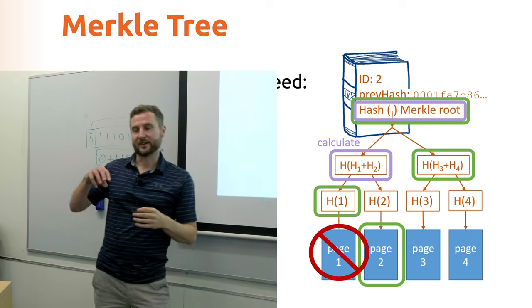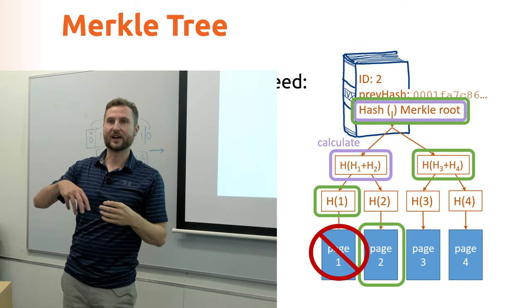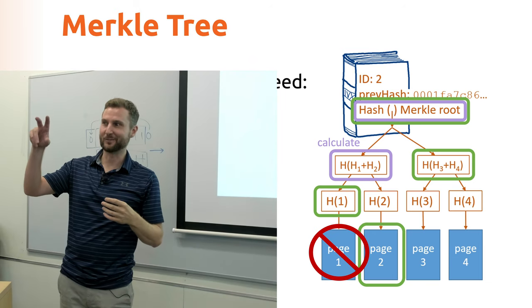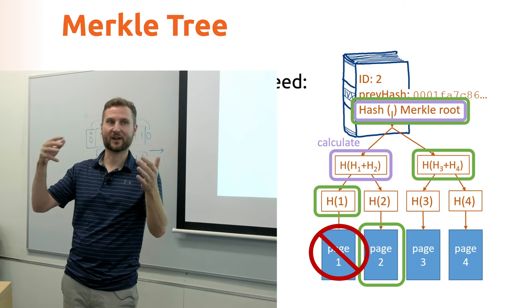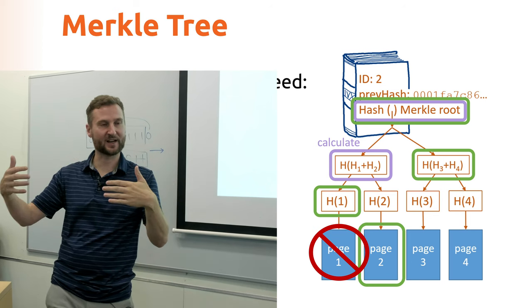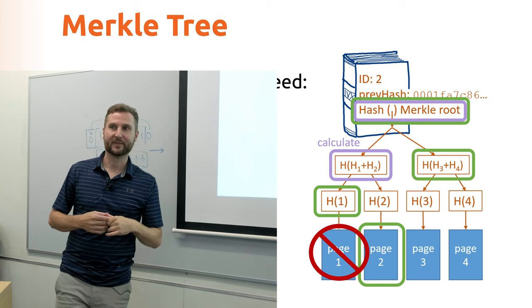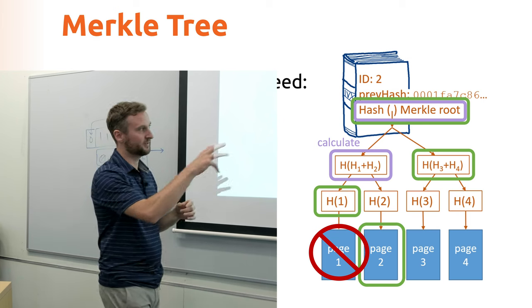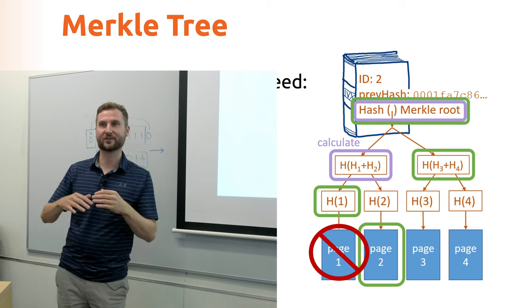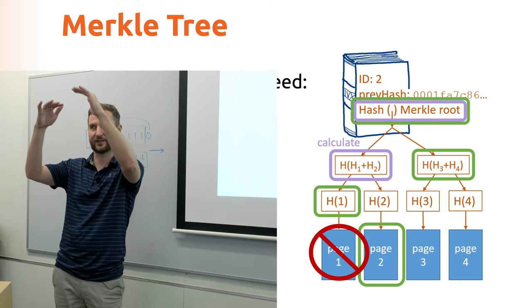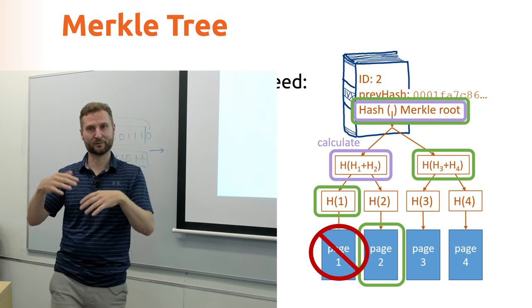And then you need to know the root. And so what you can do is, given the verification path, you can calculate your own Merkle root, compare the two, and that gives you assurance that your transaction is indeed where it should be. Keep in mind that if your transaction is not where it should be, if any of the other information is changed, your hashing at any level in the tree is going to alter the root.